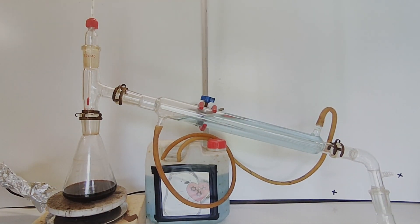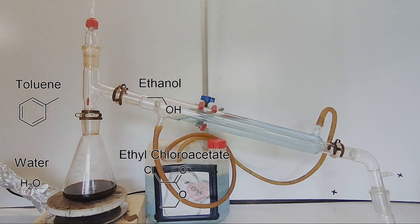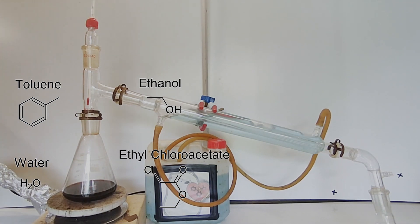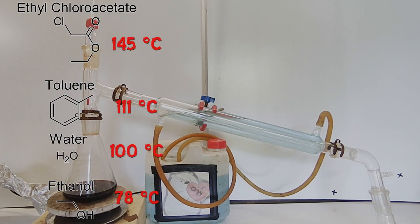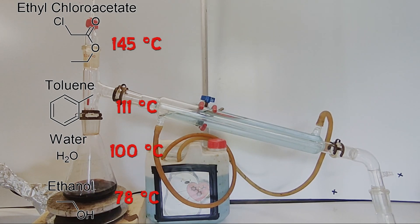These are the volatile compounds remaining in our flask, and these are the boiling points of each of them. As we can see, the boiling point of ethylchloroacetate is by far the highest.